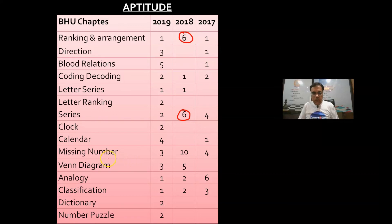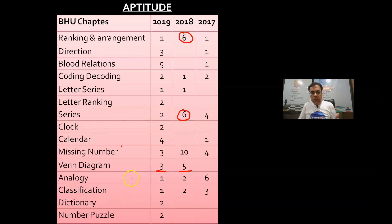Venn Diagram: 3, 5, 0 questions — set theory based questions in the quant section. Analogies: 1, 2, 6 questions. Classification: 1, 2, 3 questions. Dictionary Ranking (like word arrangement in dictionary order): about 2 questions. Number Series: about 2 questions. If you focus on these, you will have a big advantage and you can see which areas of your preparation are weak.